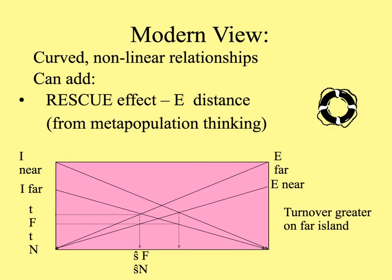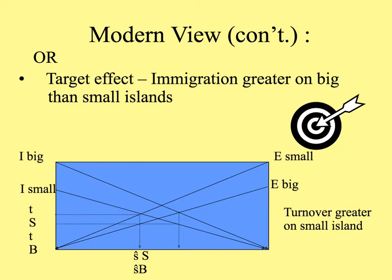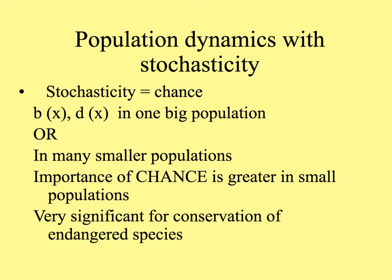In more recent views of these predictions, we realize that there are curved relationships rather than linear ones. We can also add the rescue effect — the closer an island is, the more likely the rescue effect is to take place. The target effect may also apply: the bigger the island, the greater immigration will be regardless of distance. On any island, population dynamics involve stochasticity, or chance, that the number of deaths might exceed the rate of births in smaller populations, which is very significant for endangered species conservation.